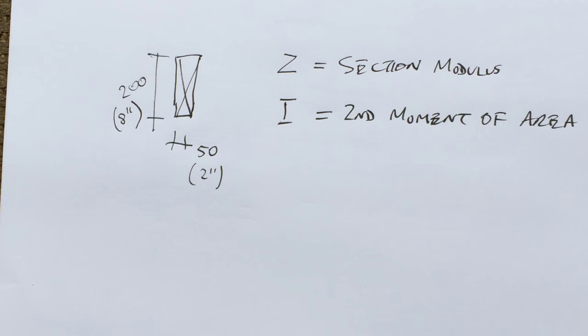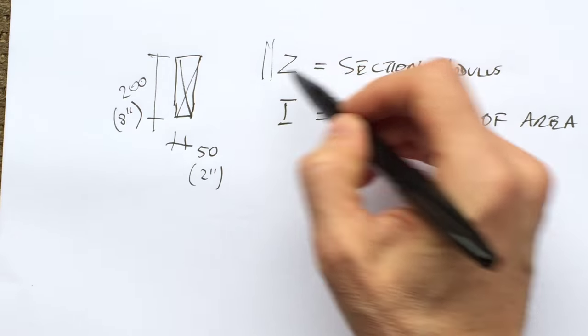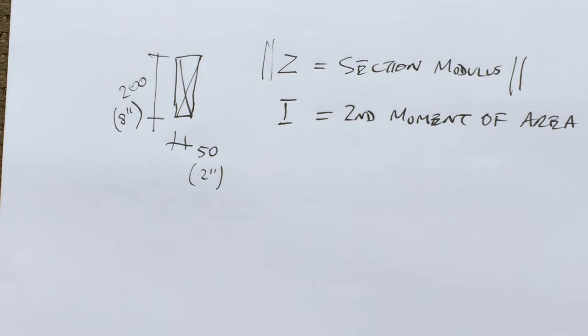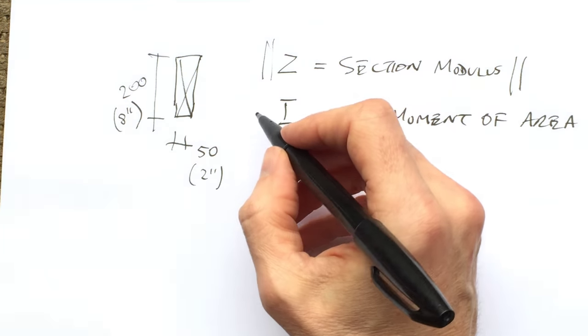Now for this video, we're just going to be looking at this one here, which is the section modulus, because we're going to work out the strength of the beam and we're going to leave deflection for another time.